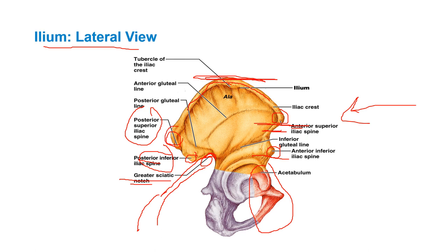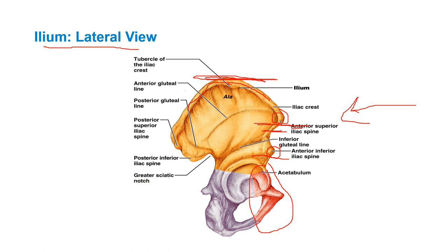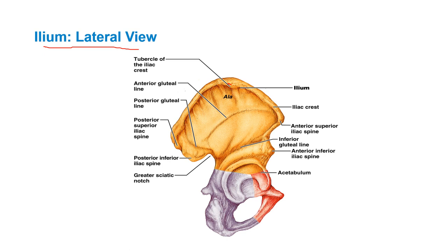The posterior superior iliac spine is a great landmark for doing SI joint functional testing — you can check somebody's sacroiliac joint to see if it's working properly. Sometimes it gets locked up. When you hip flex and hip extend, this joint is moved by large long bones with no individual muscle moving it in and out, so sometimes it gets hung up out of alignment. As a chiropractor, adjusting this is very common, from the back, the front, or using blocking techniques.